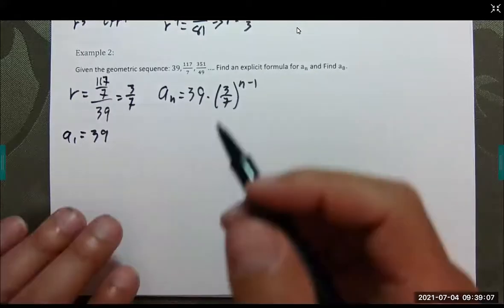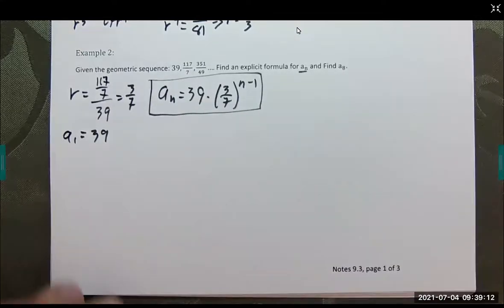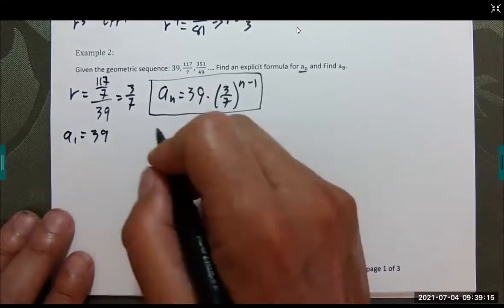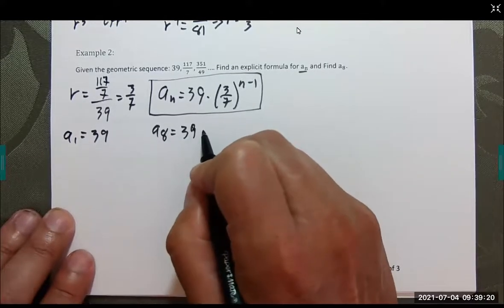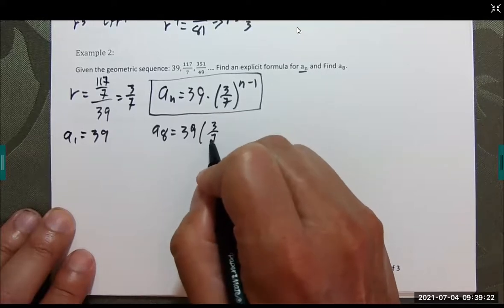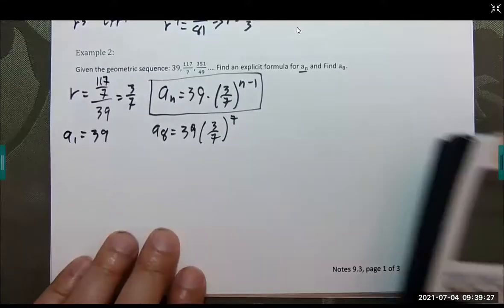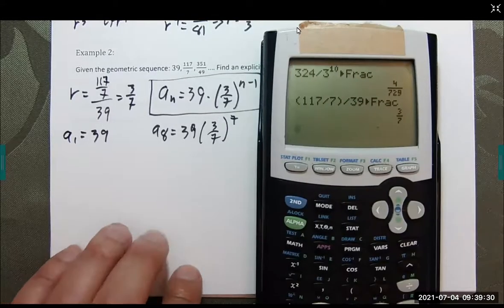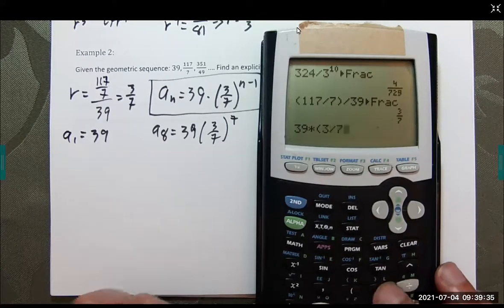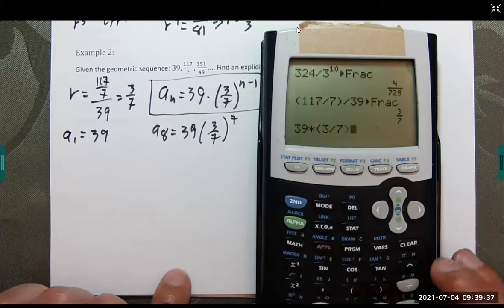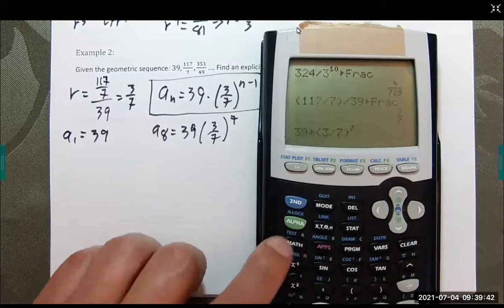We also have a sub 8. Specifically, a sub 8 is going to be 39 times (3/7) to the 7th power. Let's see what we get with that. 39 times (3/7) raised to the 7th power, and convert that to a fraction.